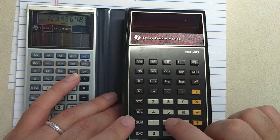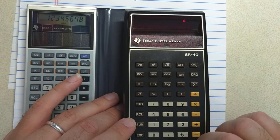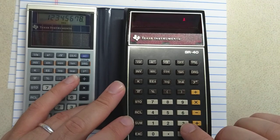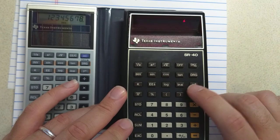What this allows you to do is, say you want to compute three to the one-fifth power. I can hit three, then exponent, parenthesis, one divided by five, close parenthesis, enter.